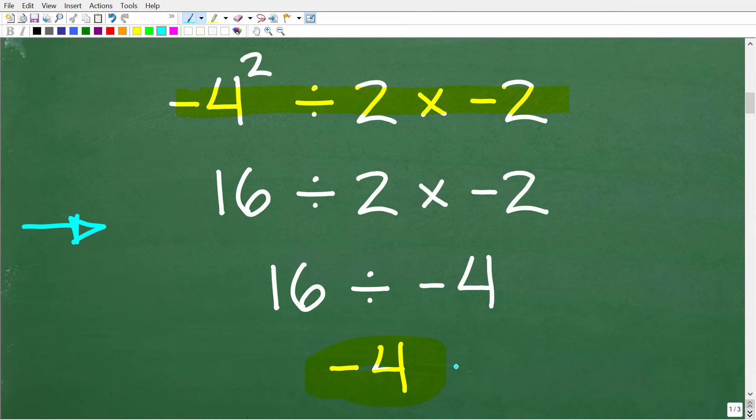If you want to pause the video, just look at this for a second. We'll go through the steps and then you tell me whether there is an error in this work. So negative 4 squared divided by 2 times negative 2.